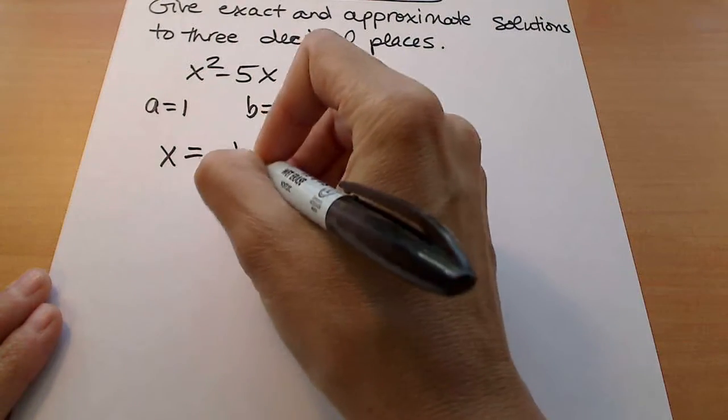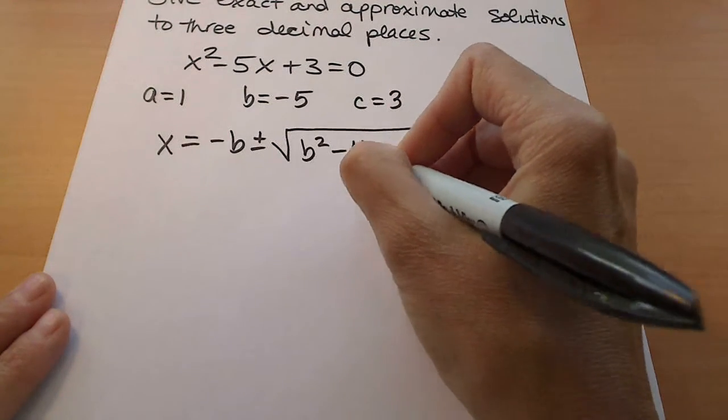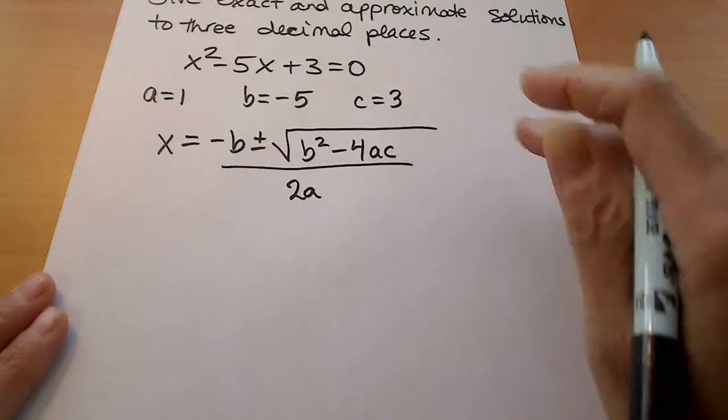So remember, our quadratic formula is this: negative b plus or minus the square root of b squared minus 4ac all over 2a.